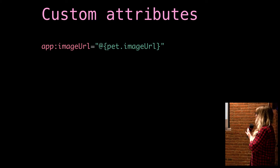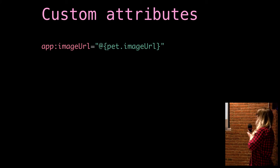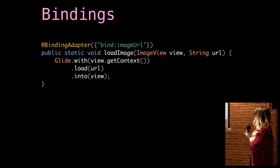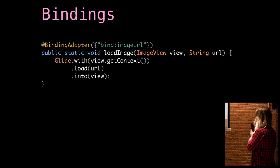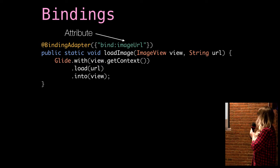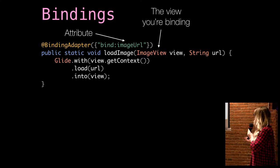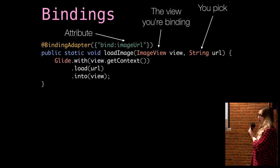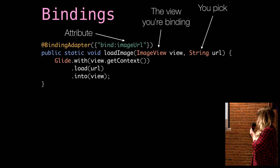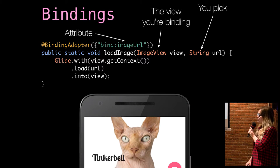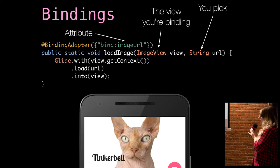Now, image URL. Suppose this is an image view. I think we all know there is no attribute on an image view called imageURL — because that would make our life too easy. But in this case, we can write it by creating a binding adapter where we say we'd like to create a custom namespace and we'd like the attribute to be imageURL. We pick the view we'd like to bind and whatever we want to pass in — in this case, the string URL. And I'm using the library Glide to load this image into my image view. And then you never need to load a hairless cat in Java code ever again. You can load the image in XML.